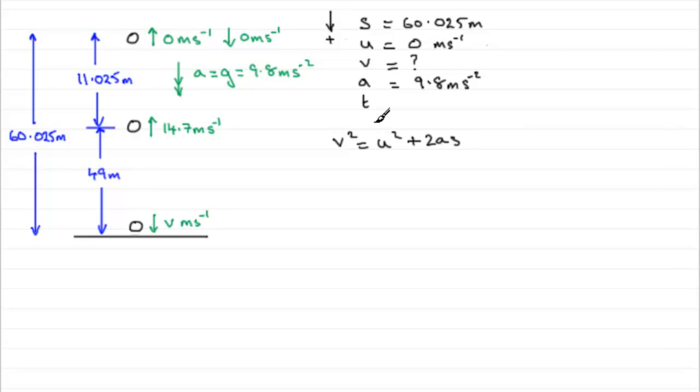And if we use this, then we've got V squared. U squared, well that's going to be 0 squared, so that's 0, so I won't bother putting that in. And then we've got 2 multiplied by the acceleration, which is 9.8, times S, which is 60.025.